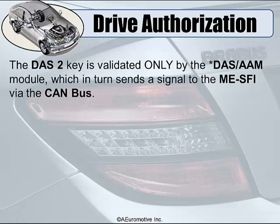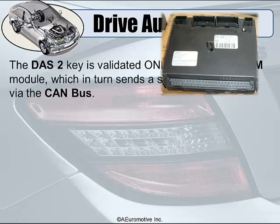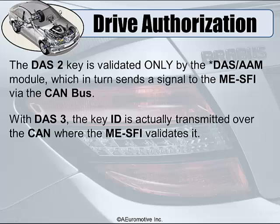The main difference between DOS 2 and DOS 3 is the way the key is validated or authorized for anti-theft protection. In DOS 2, they use what's called an AAM — an acronym for All Activity Module — and it is used strictly on the M-Class chassis, the ML versions of the vehicle. EIS is the acronym for the Electronic Ignition Switch.